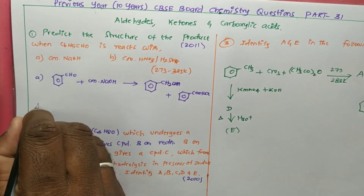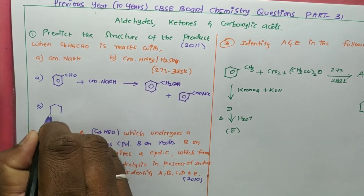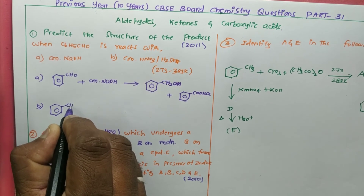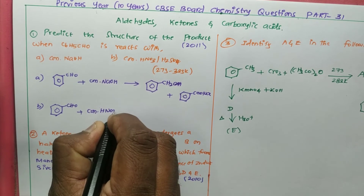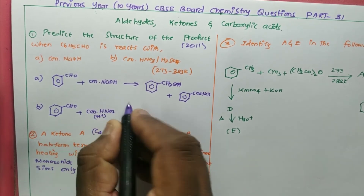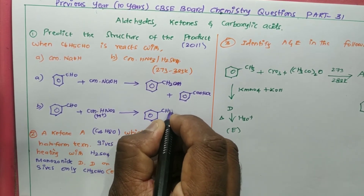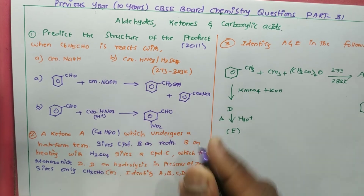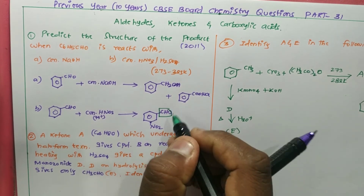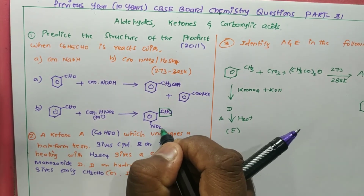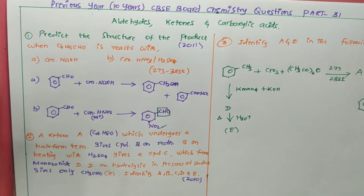Part (b): the same sodium benzoate is going to react with concentrated HNO3. If it reacts with concentrated HNO3 in presence of H2SO4, I will be getting a product. In that, the nitro group is substituted at the meta position, because the benzoate (carboxylate) group is a meta-directing group. So the major product will be formed at meta position — position 1, 2, 3 — third position is meta position.